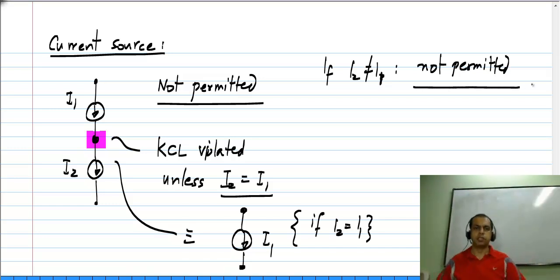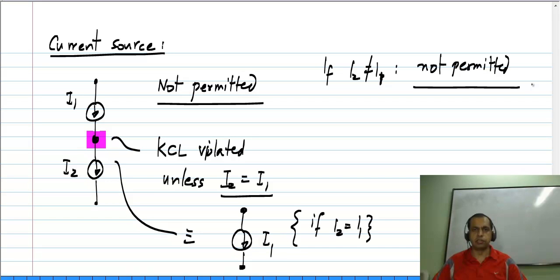So, what this means is that if you have two unequal current sources, you cannot connect them in series, because such a connection necessarily violates Kirchhoff's current law.